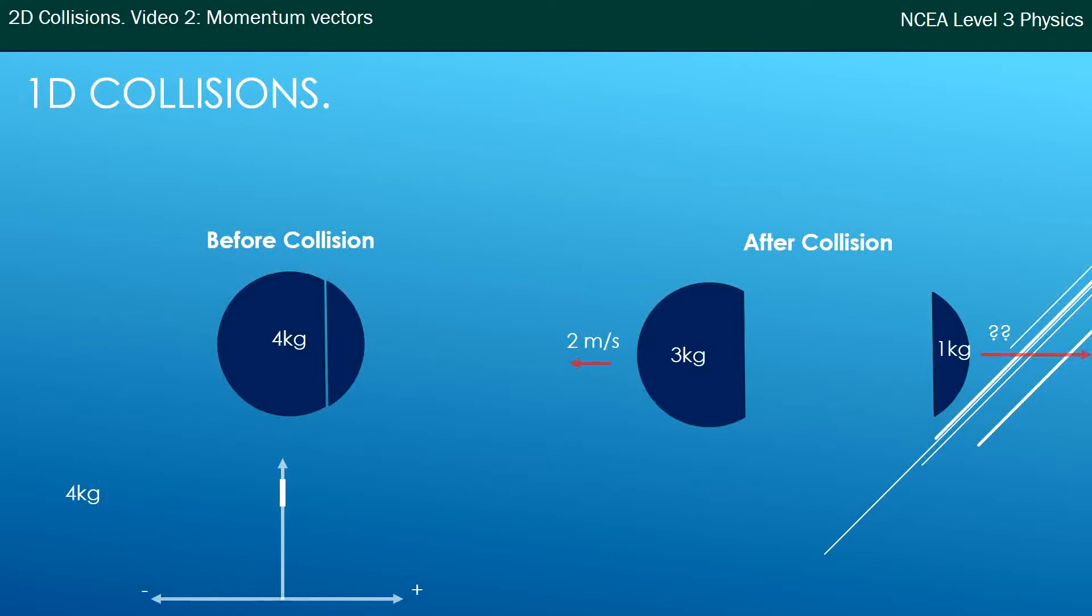So before the collision, this grenade has no momentum, so I just put a little white mark on the bar there.